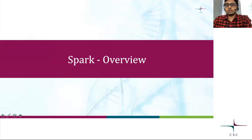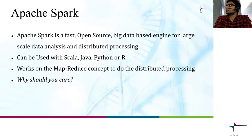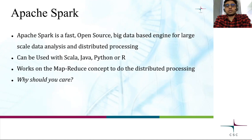Very briefly, we are going to talk about Spark. Spark is an open source big data engine which is used for processing large volumes of data. The need for Spark comes because data is increasing day by day, and traditional methods typically fail when the data is very large. Apache Spark deals with large amounts of data by making use of distributed processing. You can use Spark in Scala, Java, Python, or R. In this webinar, we are going to mostly use Python. Spark uses the MapReduce concept to do the distributed processing.